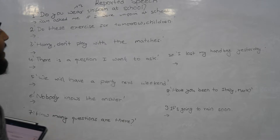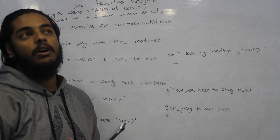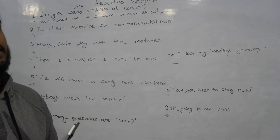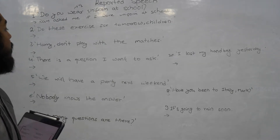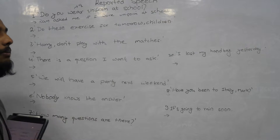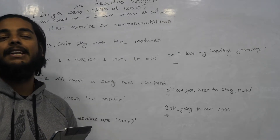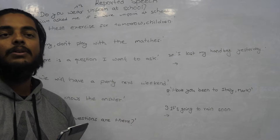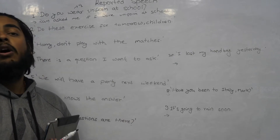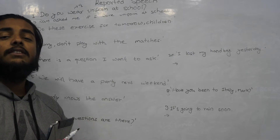Number two: 'Do these exercises for tomorrow, children.' Which type of sentence is this? It is an imperative sentence — like a command, request, or order. For example: get out, shut up, open the window, close the door.